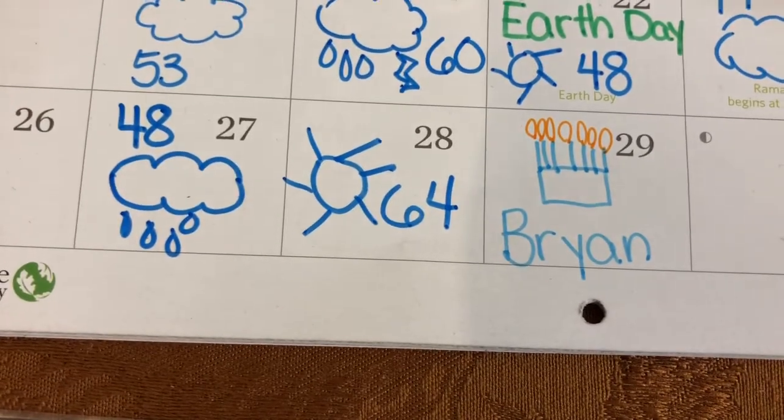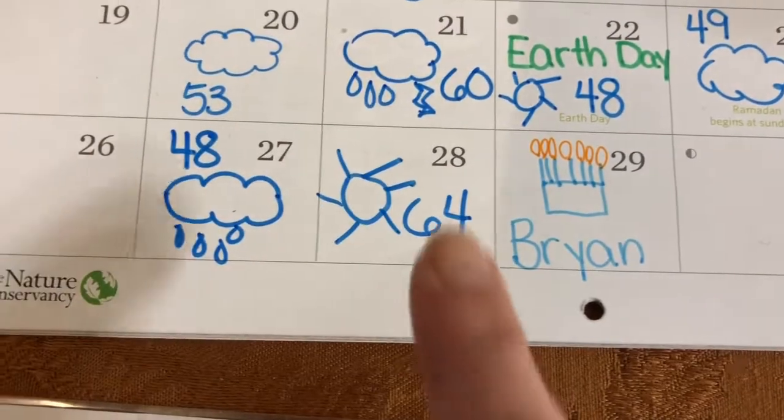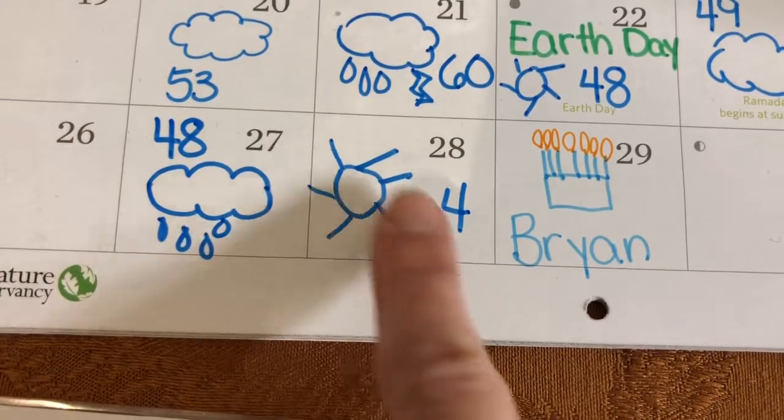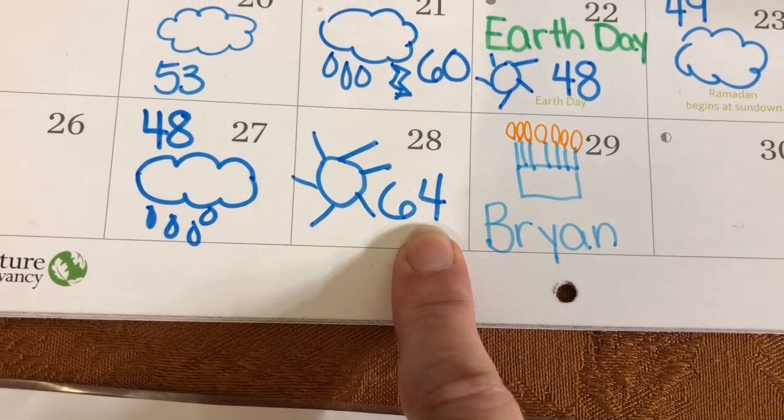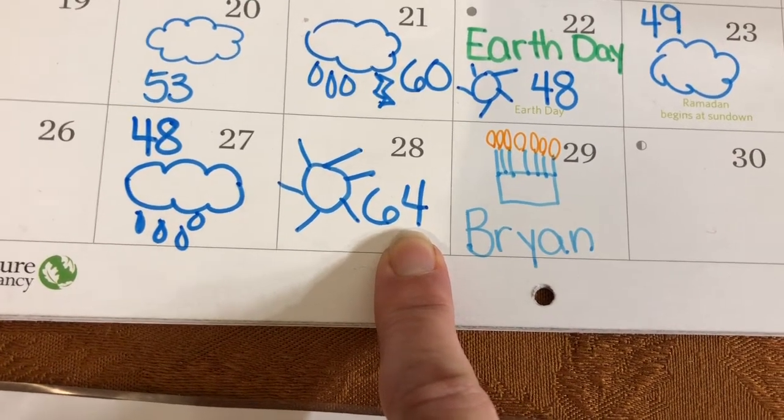Yesterday was about 48 degrees and rainy, so let's look. Yesterday was 48, and now today will be 64. Did the temperature go up or down? It did go up.